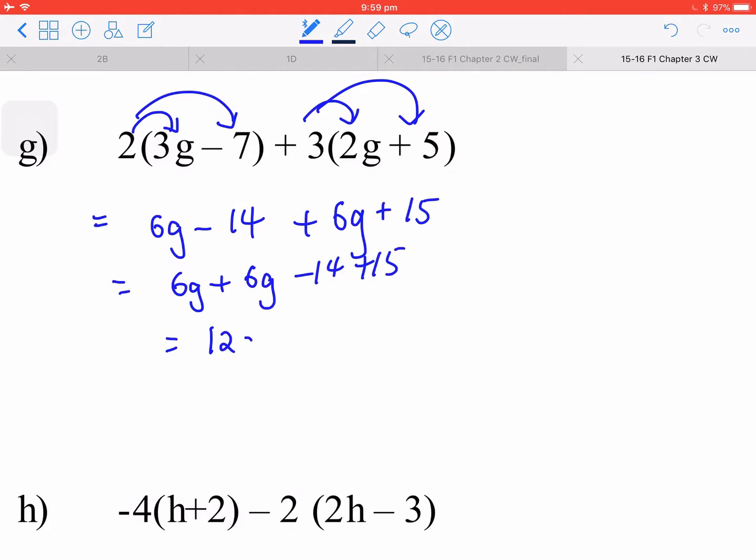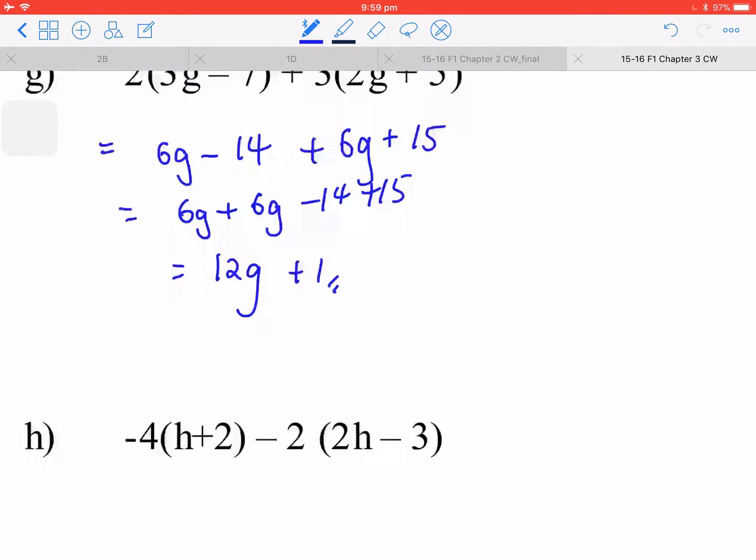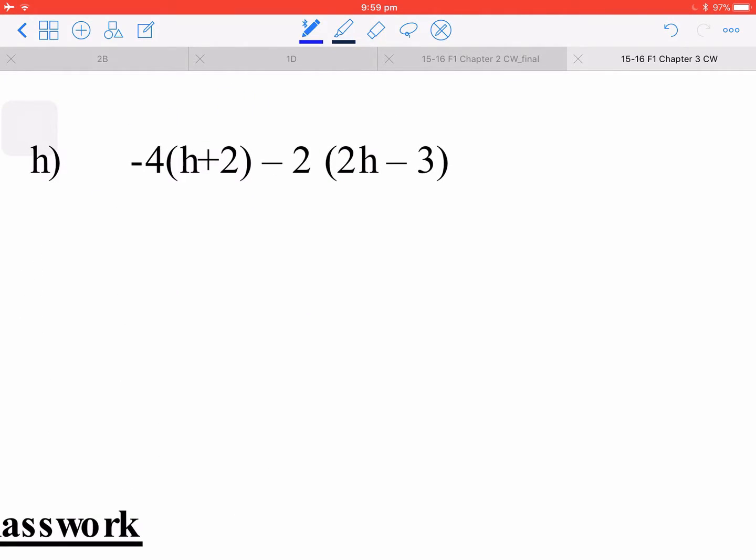This one again, that is a very important question. When you do the multiplication, you know that the negative 4 multiplies inside and the negative 2 multiplies inside. You have something like this, and then you rearrange the like terms together and the constant terms together.